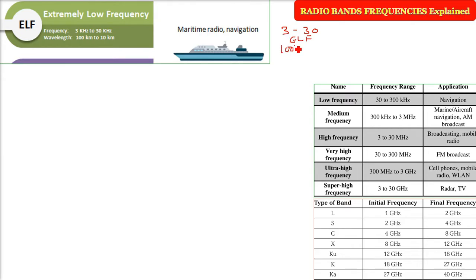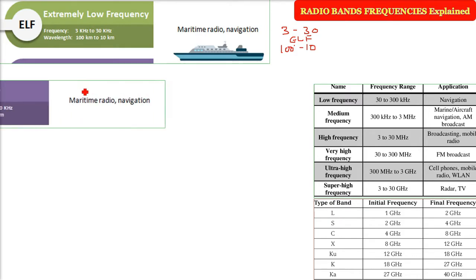The wavelength ranges from 100 kilometers to 10 kilometers. To give a sense of scale, 100 kilometers is a very large distance, and even 10 kilometers spans a different city. The applications here include maritime radio and navigation.